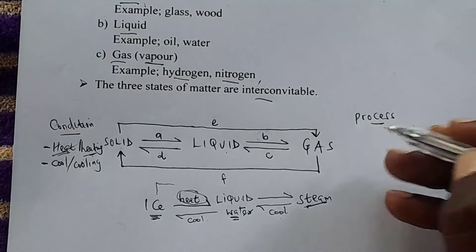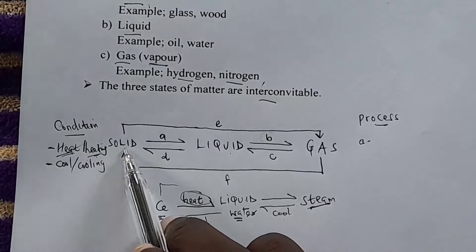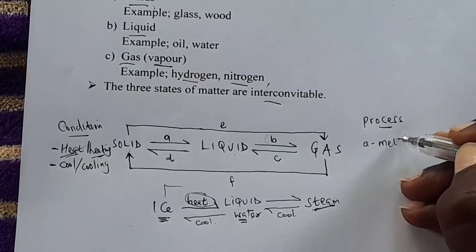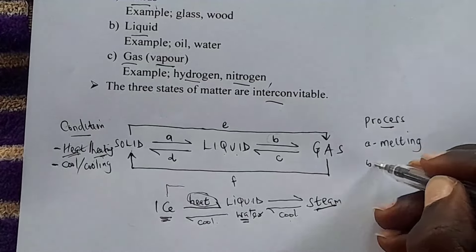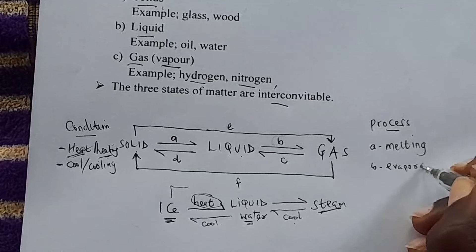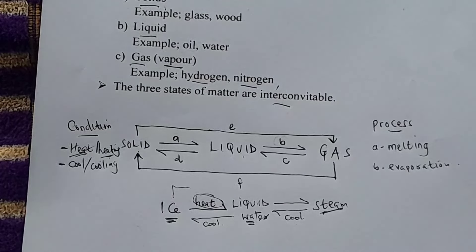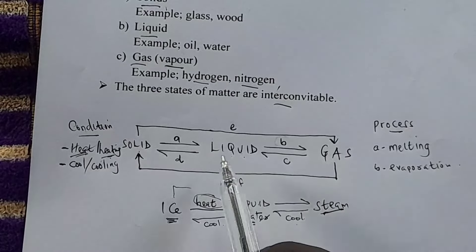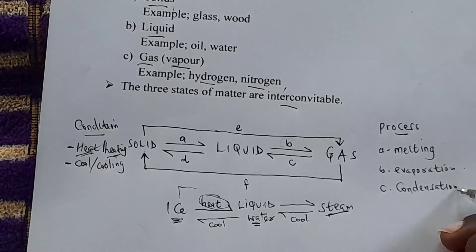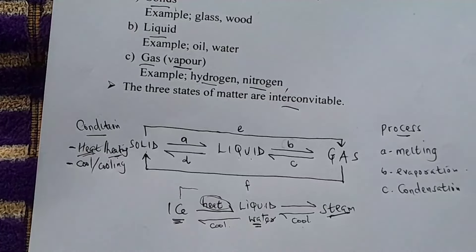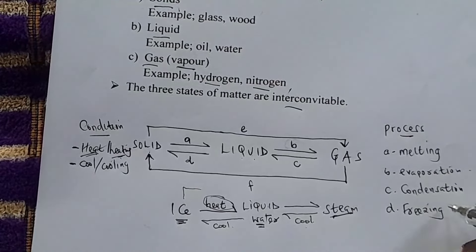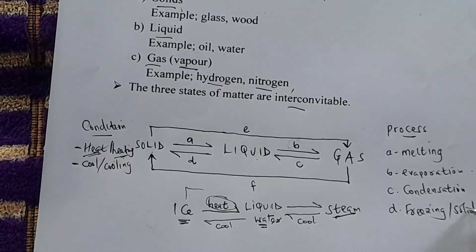Now let's go through the processes. You have learned these in standard 7 and 8. For a solid converting to a liquid (process A), the process is melting. For liquid converting to gas (process B), the process is evaporation. When gas converts back to liquid, the process is condensation. When liquid converts back to solid (process D), the process is freezing or solidification.